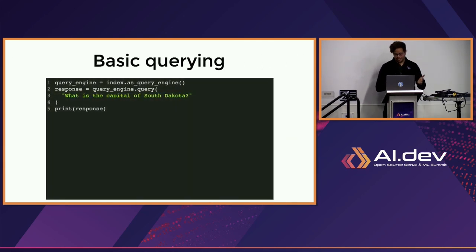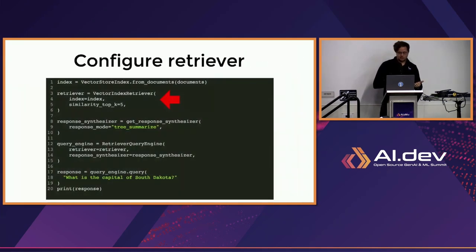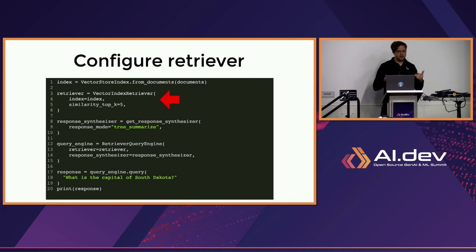And that brings us to basic querying. Let's start with the most basic form: we just get our index to give us a query engine, accept all of the defaults, and run a query. This is part of why Llama Index is so popular — you can get all the way from loading your data to getting a response in five lines of code. Of course, your query engine can be customized. What we're doing by default is retrieving the top two most relevant pieces of context from your data, but you can set it to five or any other number. This is going to be very important if you've split your text into lots of extremely small chunks — you'll want a much larger set of retrieved context.